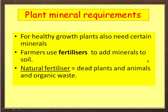Now there are two sorts. First, the farmer may put on natural fertilizer. These can be dead plant and animal remains, as well as organic waste. If you've got a compost heap in your garden, then that's what you're doing — you're preparing natural fertilizer.